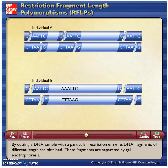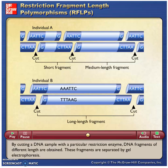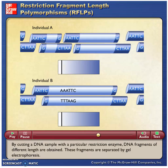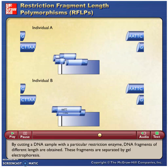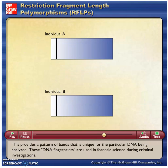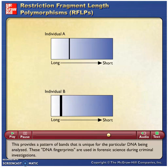By cutting a DNA sample with a particular restriction enzyme, DNA fragments of different length are obtained. These fragments are separated by gel electrophoresis. This provides a pattern of bands that is unique for the particular DNA being analyzed.